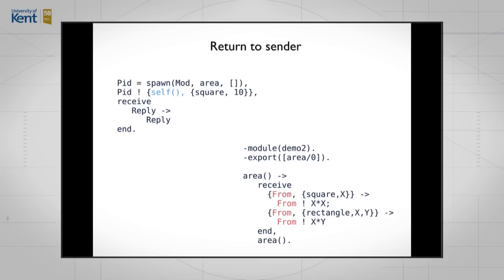To call that, we need to change what happened in the client process. Again, just as in the last thing, we say spawn mod area. In fact, mod should be demo2 in this case. Then we send it the message square of x, and then we wait for reply to come back. And that should contain this value of x squared that we saw in the last message. But there's a bit of a problem with that code.